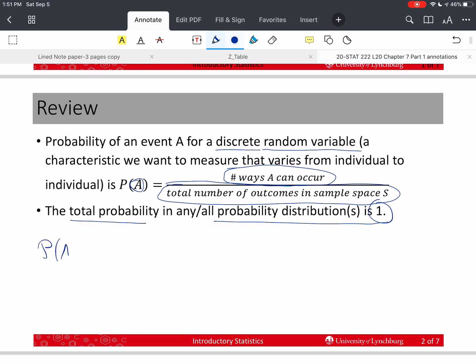For every probability distribution, the total probability has to be 1. You should also remember that the probability of any event is greater than or equal to 0. It's also less than or equal to 1. So it has to be between 0 and 1. It can be 0. It can be 1. It can't be anything else, because probability can't be negative. And it can't be greater than 1, especially since the total probability in the whole distribution is 1.